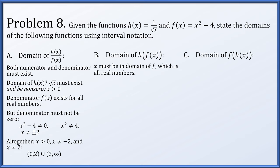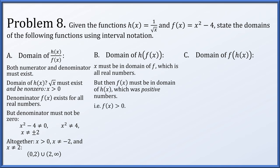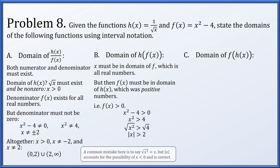For h(f(x)): x is first plugged into f, which is a polynomial with domain all reals, so no restriction yet. But f(x) must be in the domain of h, meaning f(x) must be positive: x² - 4 > 0, so x² > 4, meaning |x| > 2. It's extremely common to make the error that √(x²) = x — it is not, it's |x|. So the domain is (-∞,-2) ∪ (2,∞).